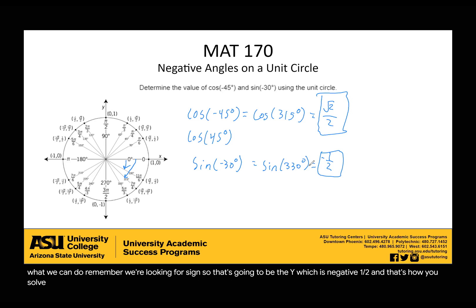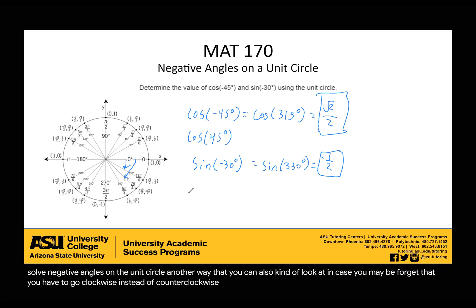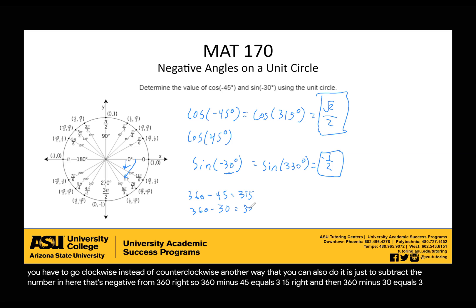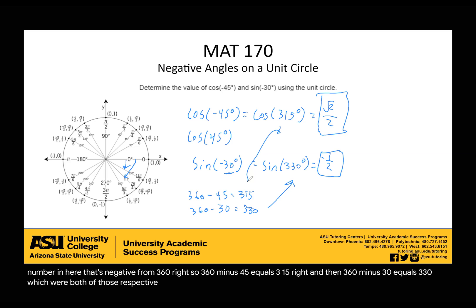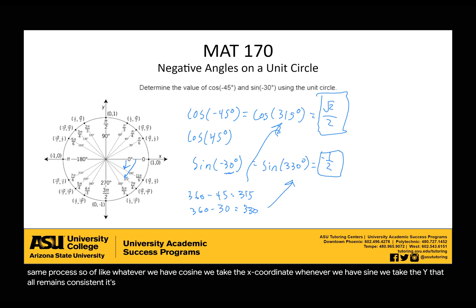And that's how you solve negative angles on a unit circle. Another way to look at it, in case you forget to go clockwise instead of counterclockwise, is to subtract the negative angle from 360. So 360 minus 45 equals 315, and 360 minus 30 equals 330 — both of those respective angles that we found. It's still the same process: whenever we have cosine we take the x-coordinate, whenever we have sine we take the y. That all remains consistent; it's just the direction you go on the unit circle.